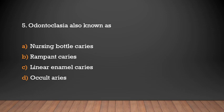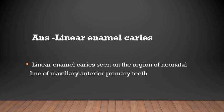Odontoclasia is also known as: nursing bottle caries, rampant caries, linear enamel caries, or occult caries? Answer: Linear enamel caries. Linear enamel caries is seen in the region of the neonatal line of maxillary deciduous primary teeth.